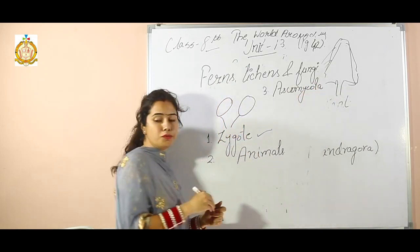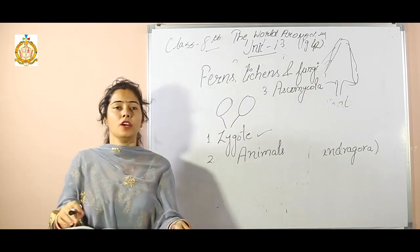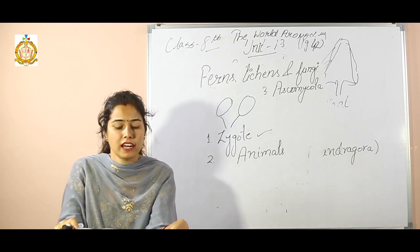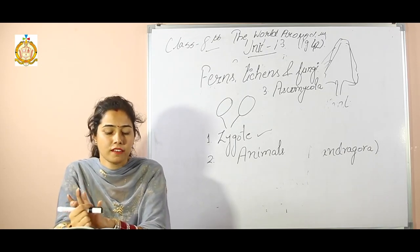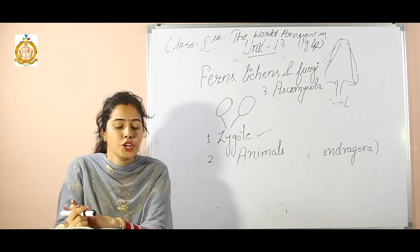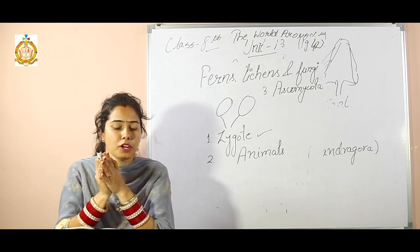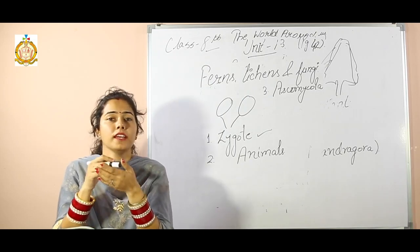The fourth question: the photosynthetic symbiote of a lichen is often moss, green alga, or brown alga. Photosynthetic symbiote means they have green pigment, so the answer is green alga.